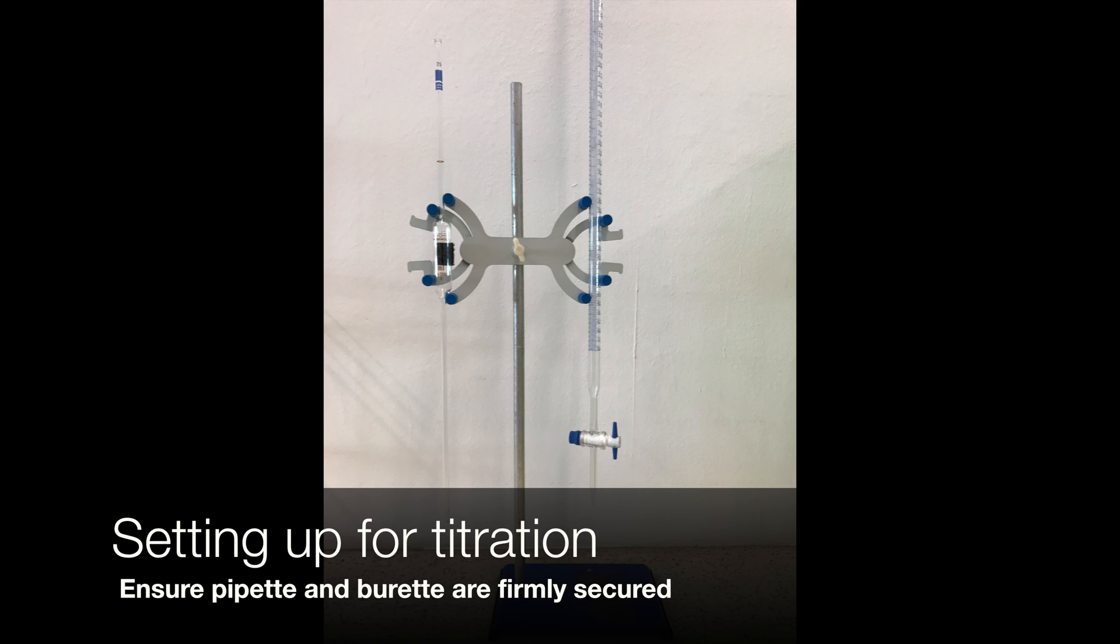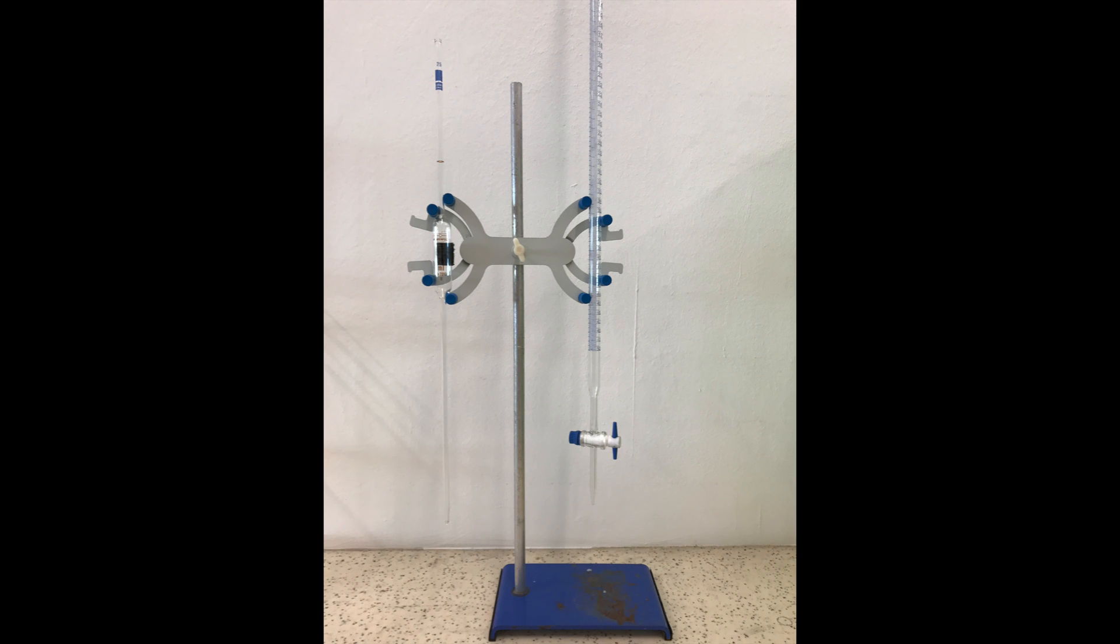Now we will set up the retort stand as follows. We have the pipette on one side and the burette on the other side. Note that the side with the burette should be directly above the base of the retort stand. We will need to place the white tile there later.